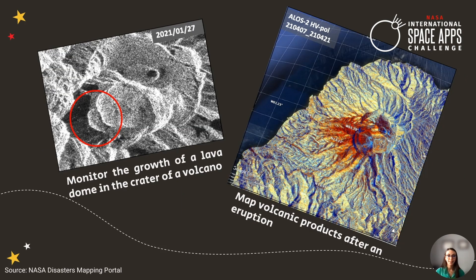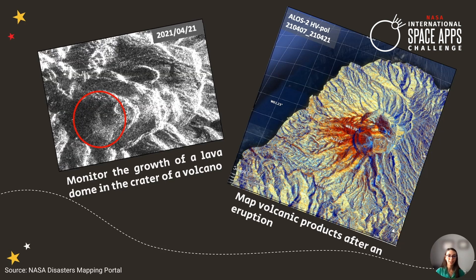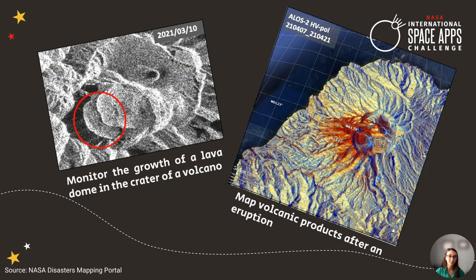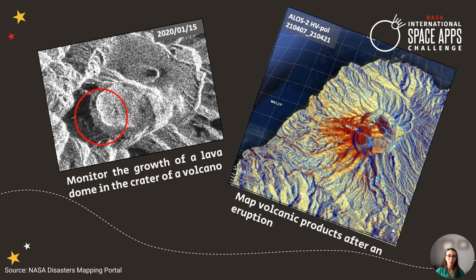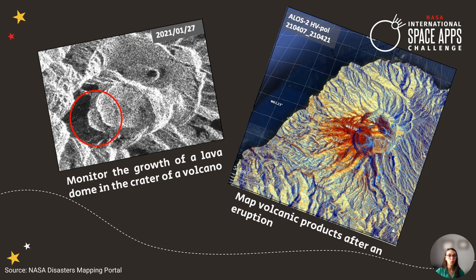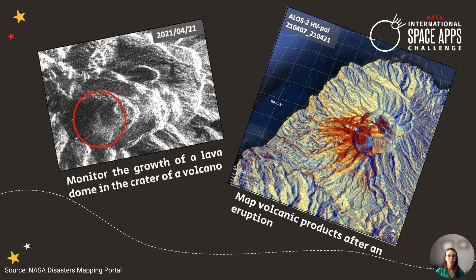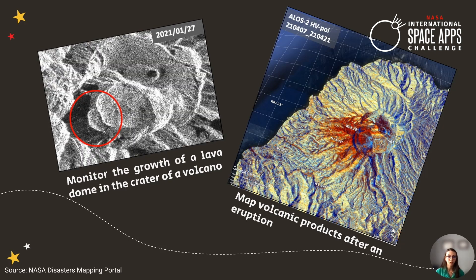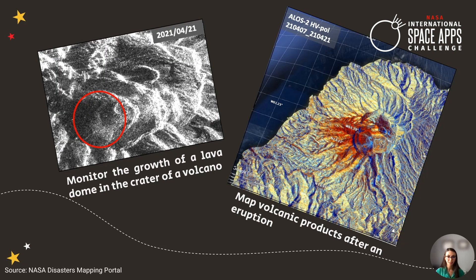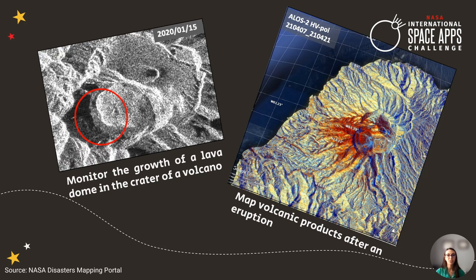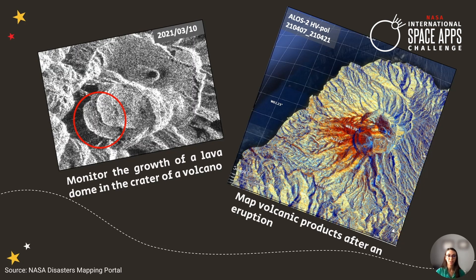SAR can also be used to monitor activity, like the growth of a new lava dome inside a crater, and where the volcanic flows and ash were spread out during the eruption. This is all done by looking at time series of the intensity of the SAR signal to detect surface changes.